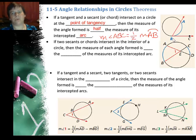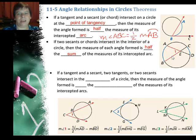Now if two secants or chords intersect in the interior of a circle, then the measure of each angle formed is half of the sum of the measures of the intercepted arcs, not just one arc, but two.